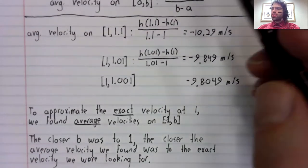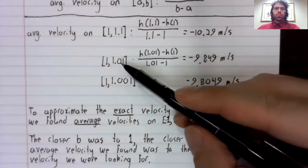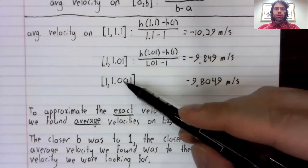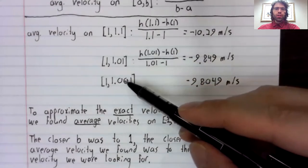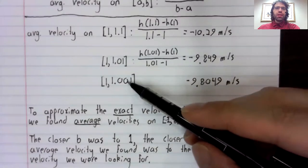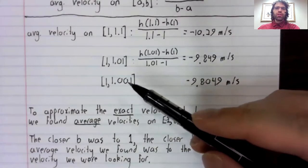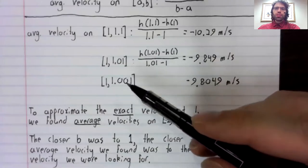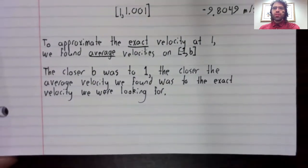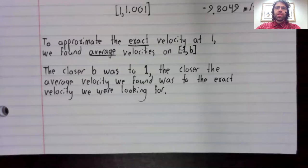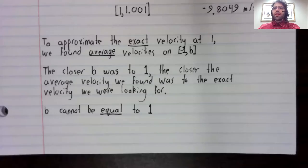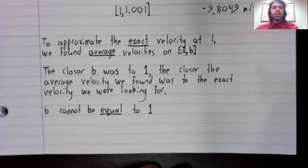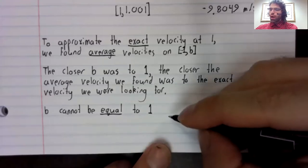Now, you see that there are 1.1, 1.01, 1.001. We were letting B get closer and closer to one. But, and this is a key observation, B cannot actually equal one.